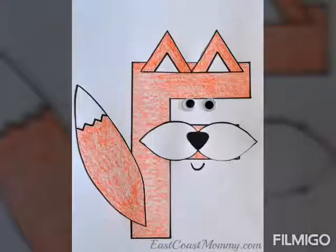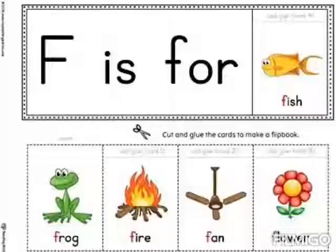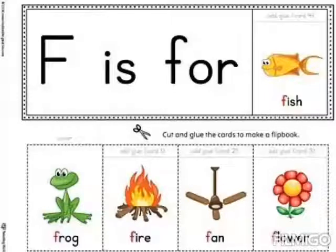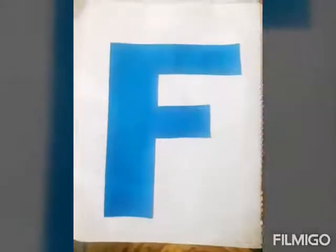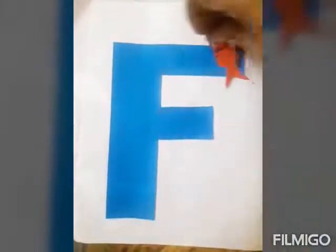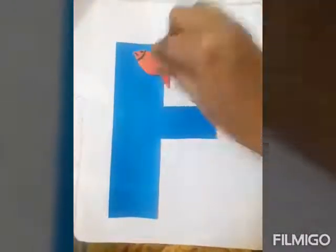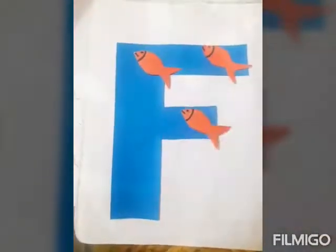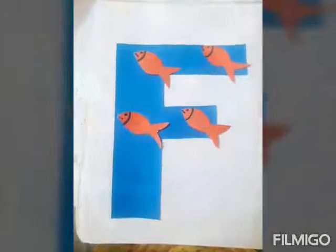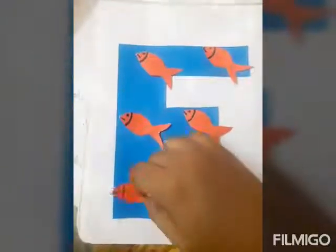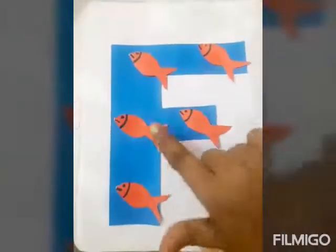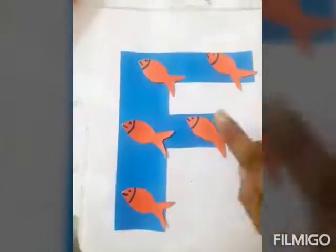F is for fox. Fox is very cunning. F is for fish, frog, fire, fan, and flower. Now I am showing you how to decorate F with some fishes — I have five fishes. How many fishes are there? Five!